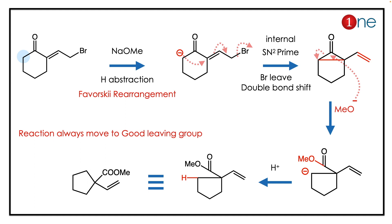As a result, you have cyclopropanone formation. For the ring opening, methoxide attacks, the ring is opened, and then the anion is formed. The anion is protonated by workup, giving you the final product.